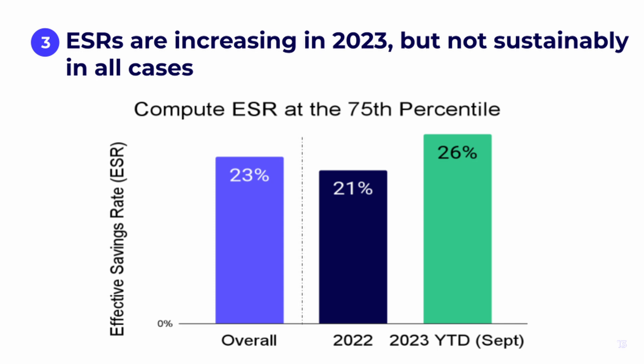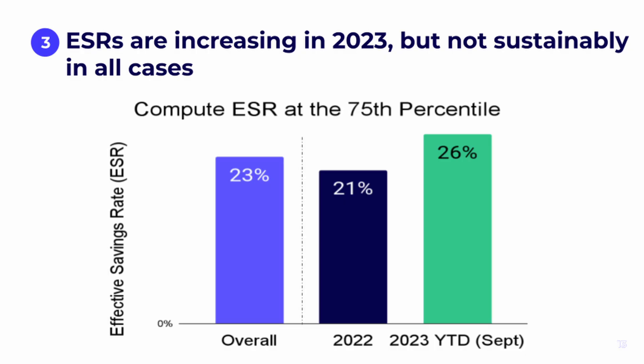When looking at how ESR has changed over time, on the surface ESR has been improving from 2022 to 2023 year-to-date. Technology companies have reduced their compute usage and optimized engineering over the past year — perhaps due to the economic downturn. This temporarily increases coverage and drives up ESR, but it may be temporary or even unintentional. The key question is whether your ESR is sustainable. AWS Q3 earnings show revenue trends have flattened, suggesting we may be at the end of the downturn, so you need a long-term strategy focused on increasing savings rather than just decreasing usage.